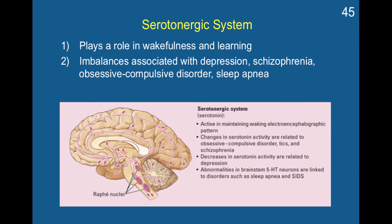Finally, the serotonergic system plays a role in wakefulness and learning. Imbalances are associated with depression, schizophrenia, obsessive-compulsive disorder, and sleep apnea. Serotonin is active in maintaining the waking EEG state; patterns in serotonin activity are related to OCD, tics, and schizophrenia, while decreases are related to depression. Abnormalities in brainstem serotonin — referred to as 5-HT — neurons are linked to disorders such as sleep apnea and SIDS, or Sudden Infant Death Syndrome. More on serotonin's relationship with sleep will be covered later.